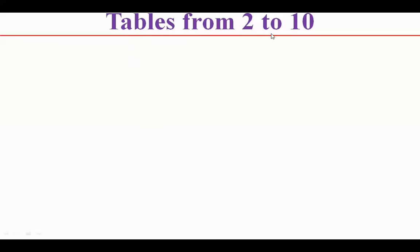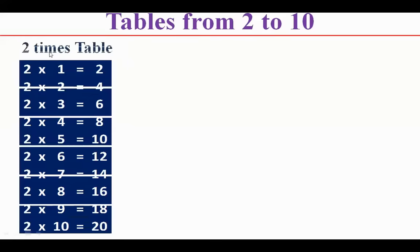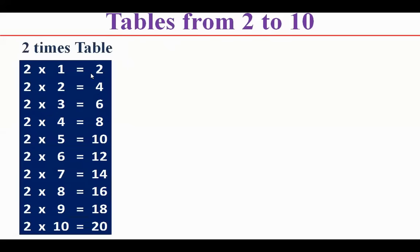Tables from 2 to 10. 2 times table: 2 1s are 2, 2 2s are 4, 2 3s are 6, 2 4s are 8, 2 5s are 10, 2 6s are 12, 2 7s are 14, 2 8s are 16, 2 9s are 18, 2 10s are 20.